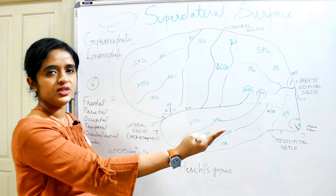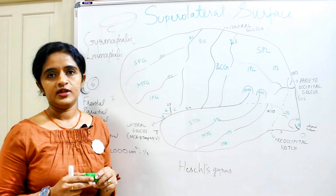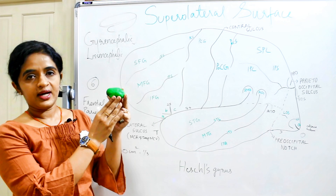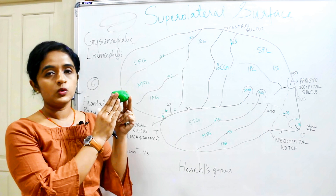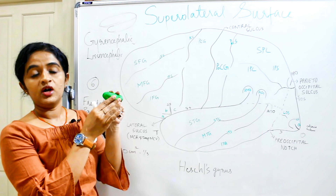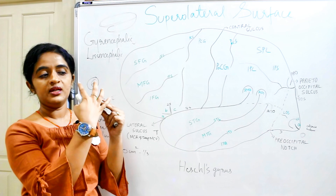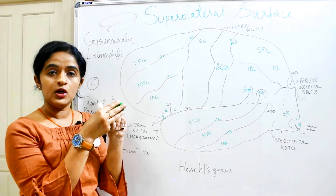Considering one cerebral hemisphere, it has three main surfaces. The convex, bulged region is the superolateral surface. The flat surface facing the opposite cerebral hemisphere is the medial surface. The lower portion is the inferior surface. The superolateral surface is in relation to the cranial vault, the medial surface faces the opposite hemisphere, and the inferior surface sits in the anterior and middle cranial fossa.